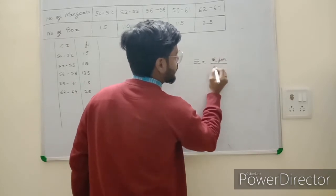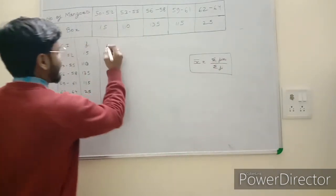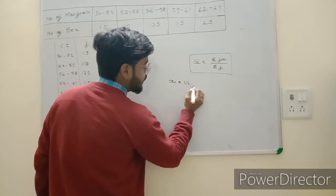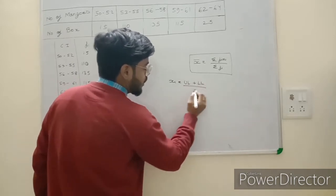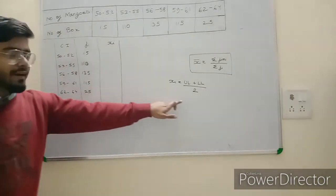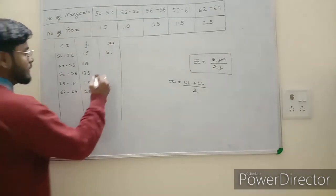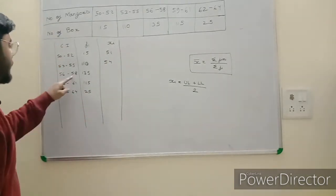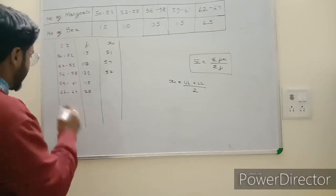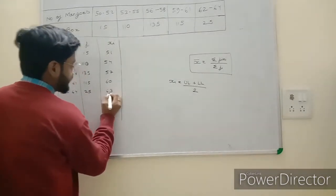The formula for the simple method is: mean equals summation of fi×xi upon summation of fi. To find xi, use xi equals (upper limit + lower limit) divided by 2. So for 50–52: (52+50)/2 = 51, giving midpoints 51, 54, 57, 60, and 63.